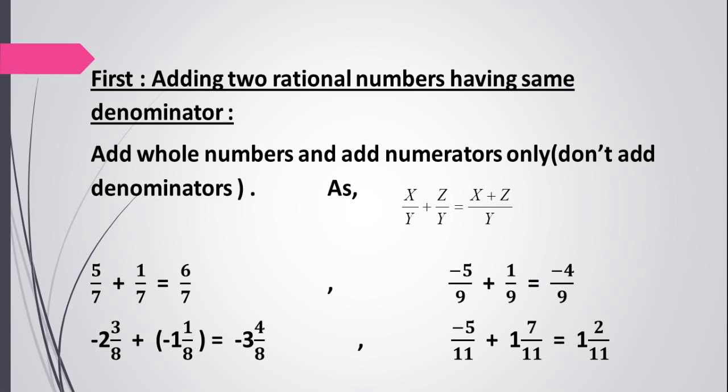For negative 2 and 3 over 8 plus negative 1 and 1 over 8, we add the whole numbers: negative 2 plus negative 1 equals negative 3. Then add 3 over 8 plus 1 over 8 — same denominators, keep the denominator as 8 and add only numerators: 3 plus 1 equals 4. For negative 5 over 11 plus 1 and 7 over 11, different signs, we subtract: the whole number stays 1 and 7 minus 5 equals 2 over 11.